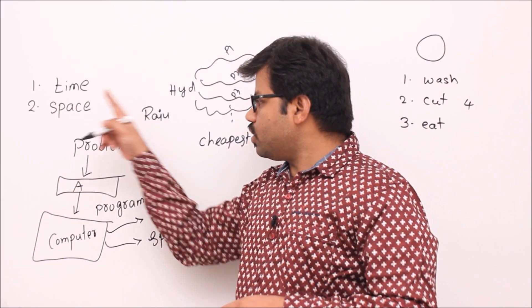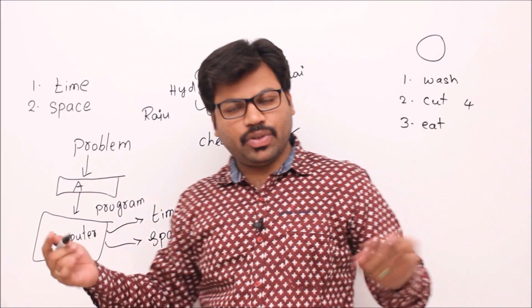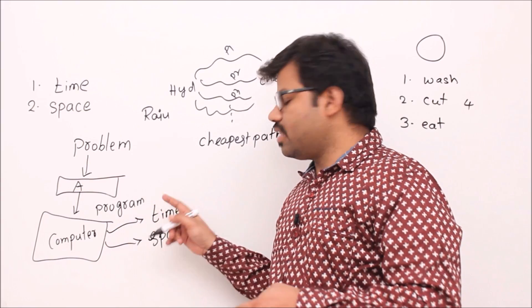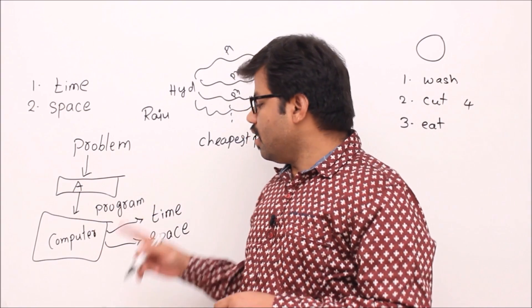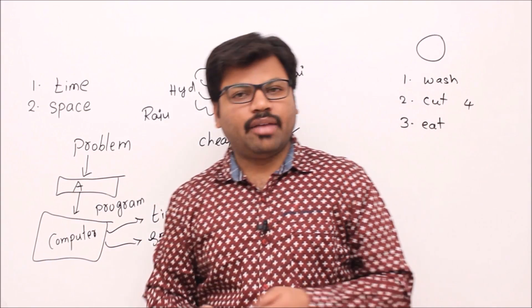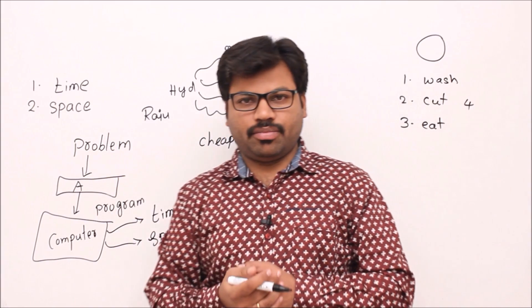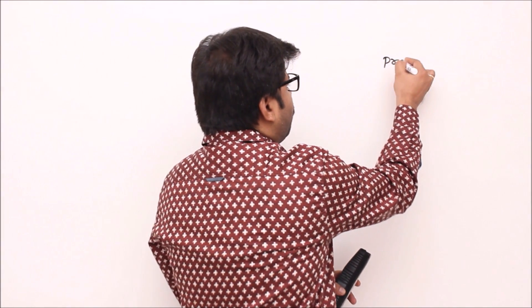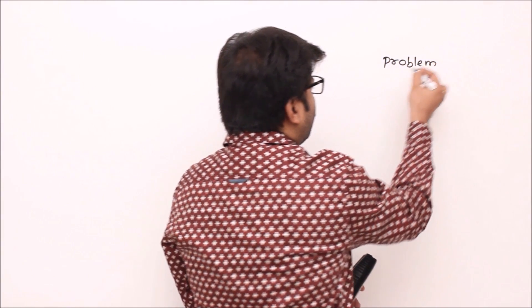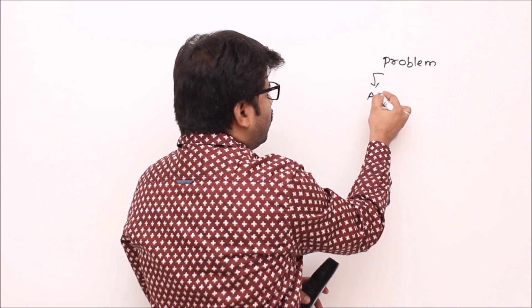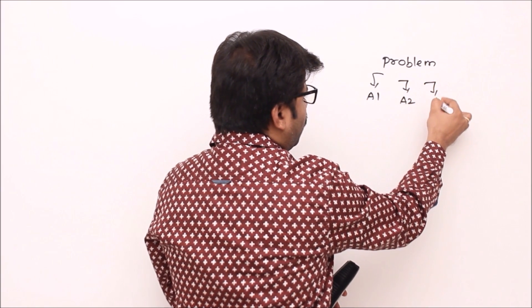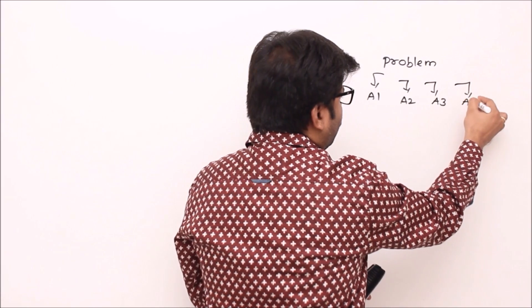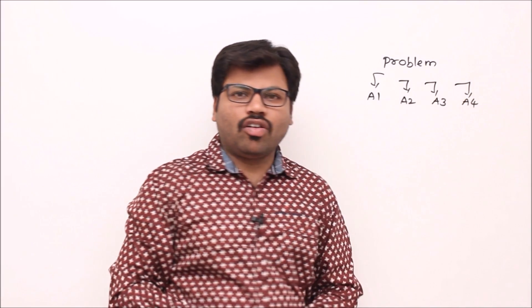So the time and space that the computer uses when executing your program become the time complexity and space complexity of your algorithm. Now, why are these two such important properties? Consider a problem that has four algorithms: a1, a2, a3, and a4. Why would a single problem have multiple algorithms?